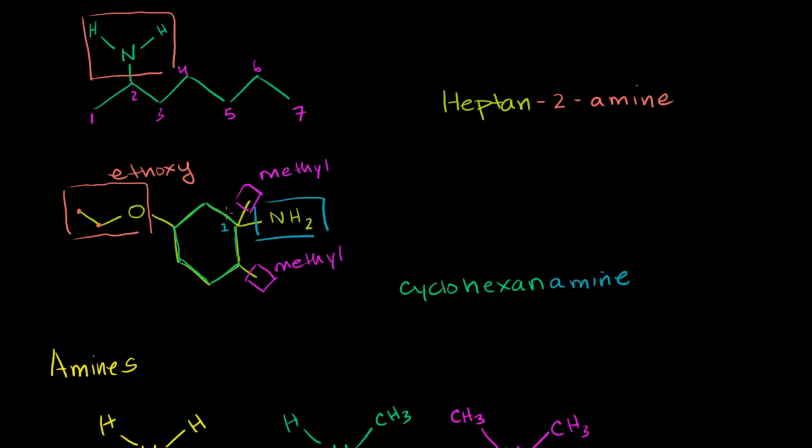And when we think about numbering, we could number from one, two, three, or we could start numbering one, two, three. And in general, you want to go numbering in the direction where you hit the functional group first. So we want to go one, two, three, four, and five. So this right here is 5-ethoxy. And then this is one, two-dimethyl.